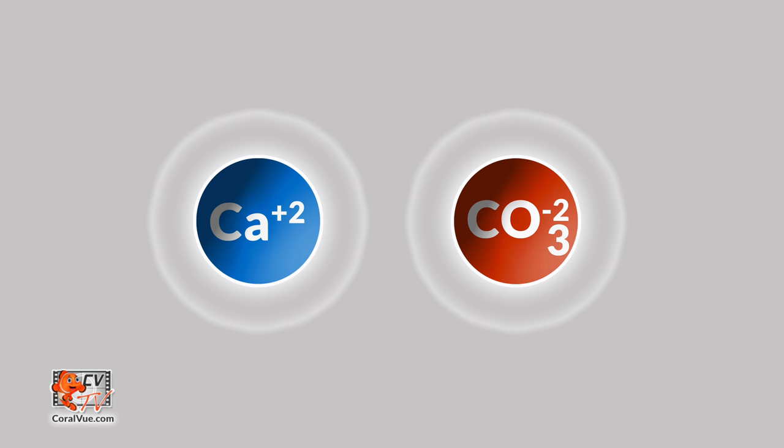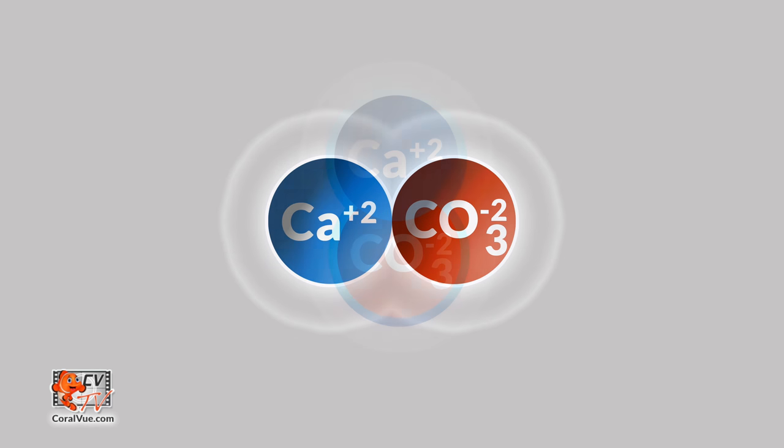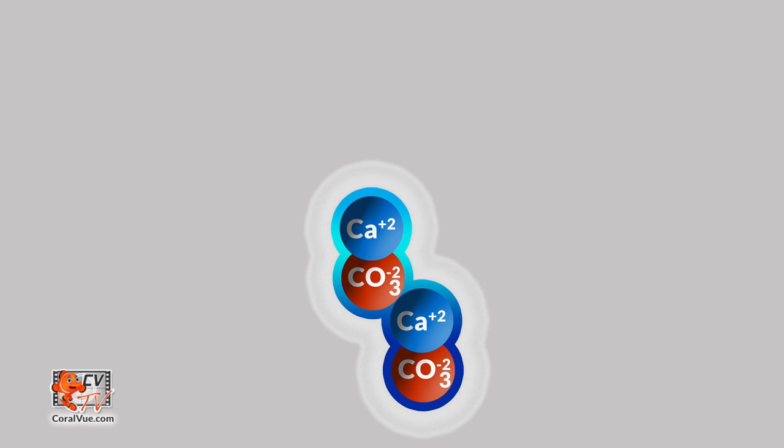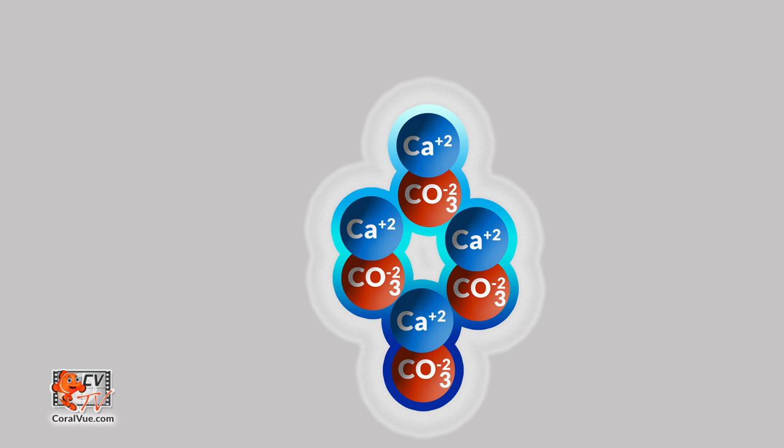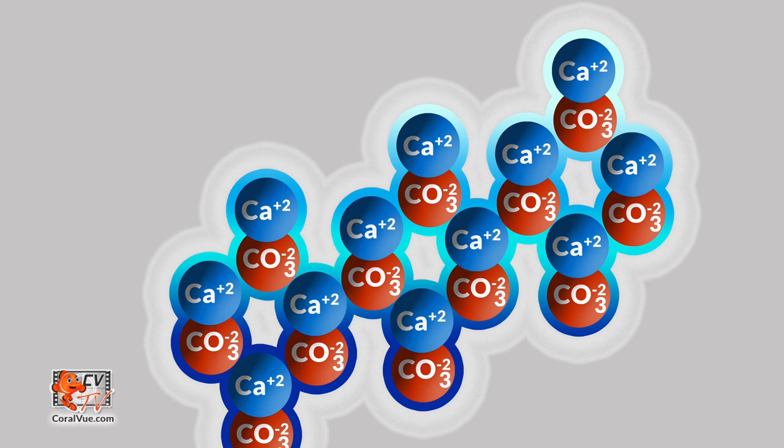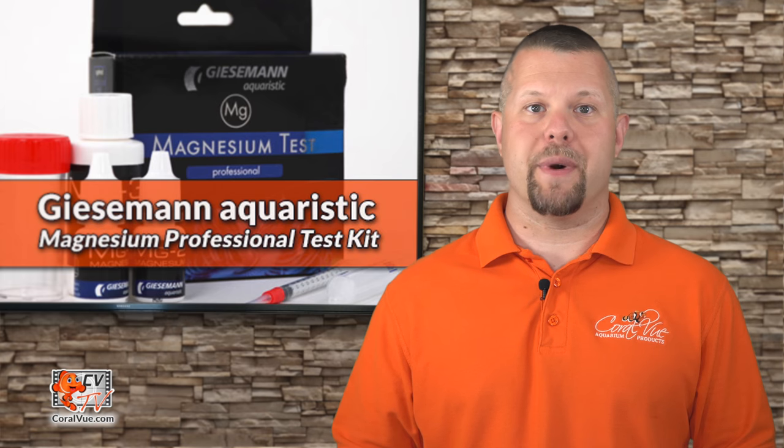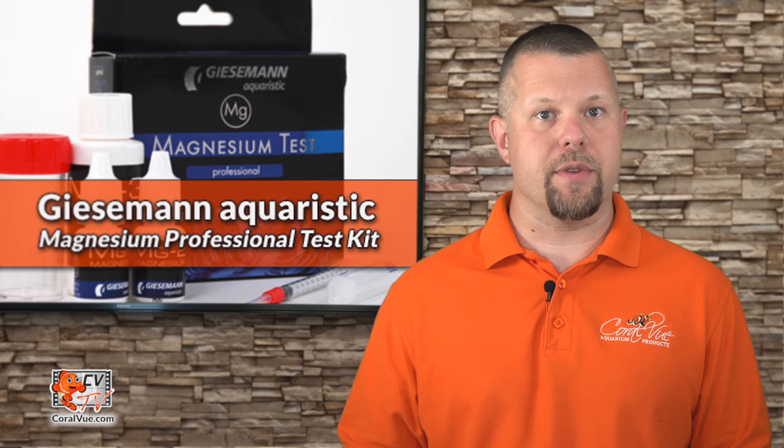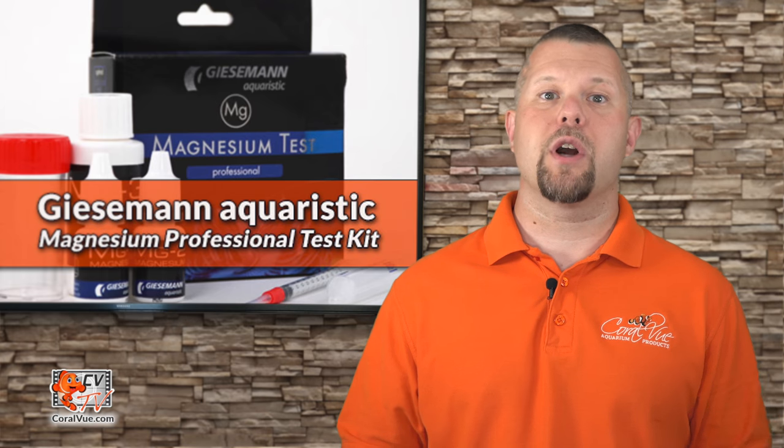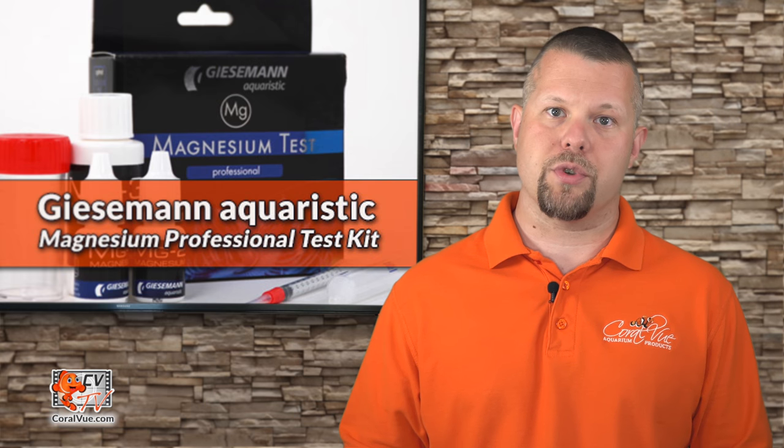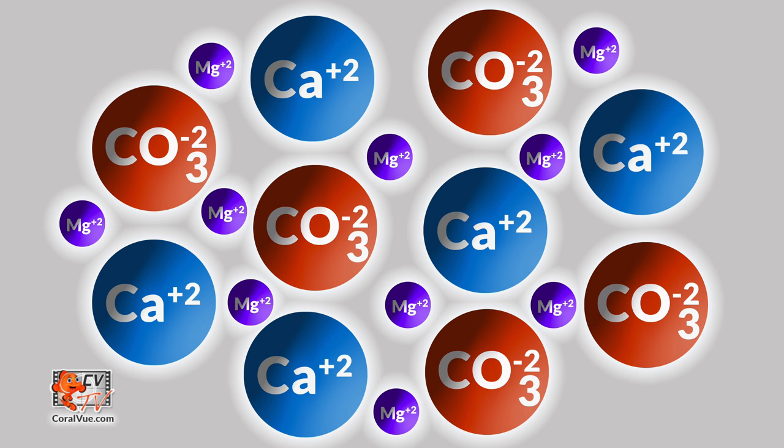Calcium and carbonate ions have an affinity to each other and will bind to create tiny calcium carbonate crystals. These crystals tend to attract more free-floating carbonate and calcium ions, therefore removing them from the water. Magnesium works by attaching itself to the surface of the crystals and preventing other carbonate and calcium ions from attaching themselves to the crystal structure. In other words, magnesium keeps individual calcium and carbon ions free and available for our corals to intake.